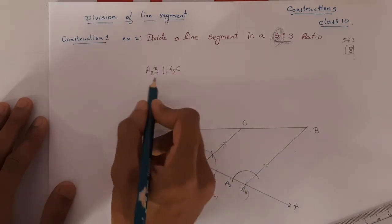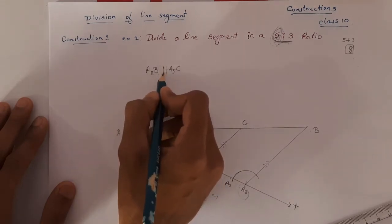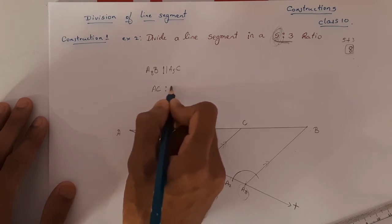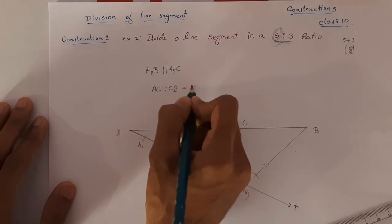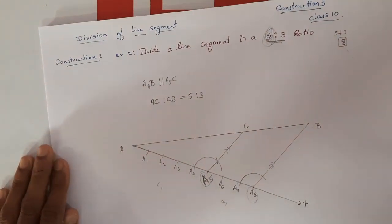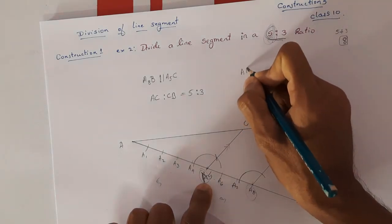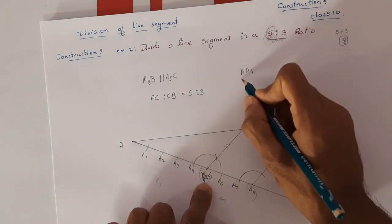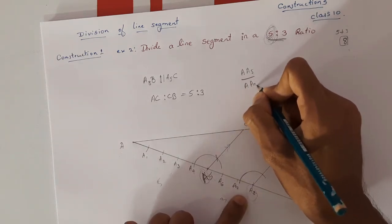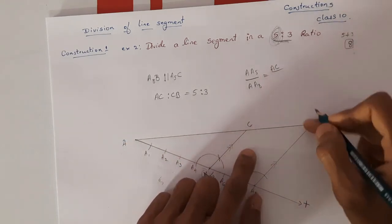The line A5C must be parallel to the line A8B — it should not meet or touch that line. You can verify this visually: they are parallel and do not intersect. So we can write that A8B is parallel to A5C. This parallel relationship gives us the ratio: AC to CB equals 5:3.